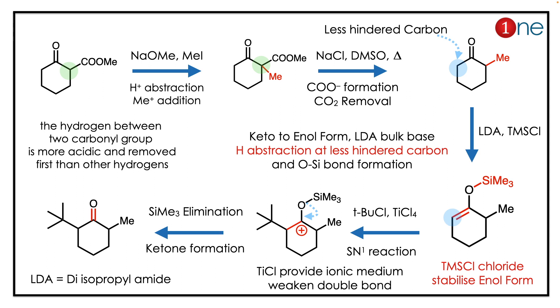Following the elimination pathway with heat, the final product is cyclohexanone with a methyl group and a tert-butyl group. The key concept outlined here is that you have to know the role and types of bases.